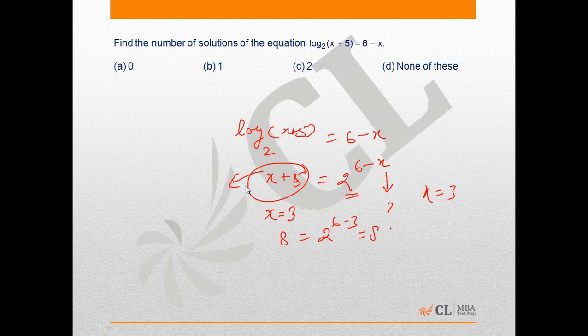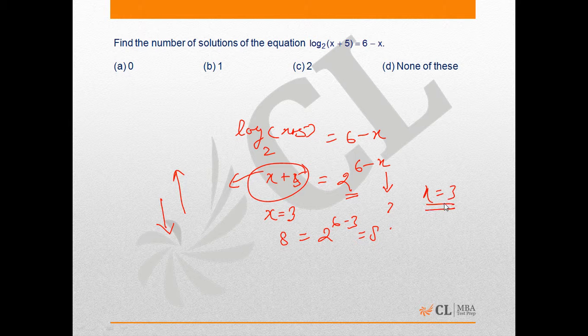From x=3 onwards, value of 2 raised to power (6-x) will move in opposite direction to the value of (x+5), so from here we can say that there is only one possible value of x that satisfies this equation.